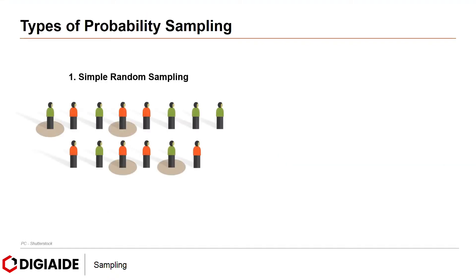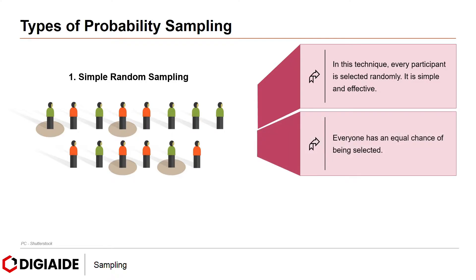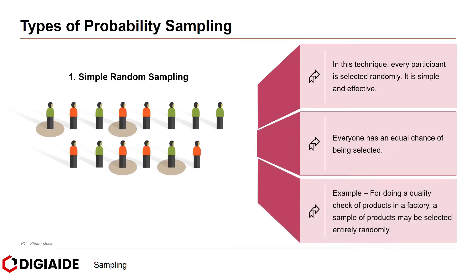The first type is simple random sampling. In this technique, every participant is selected randomly. It is simple and effective, and everyone has an equal chance of being selected. For example, for doing a quality check of products in a factory, a sample of products may be selected entirely randomly.